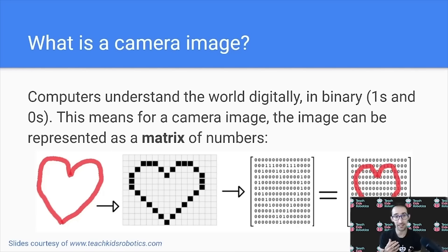And that grid can be represented as a matrix of numbers. And in this example below, we have a heart, which can be represented as a heart on a grid. And then that grid can be transformed into a grid of numbers, known as a matrix, where that set of numbers reflects what is actually going on in the original image.